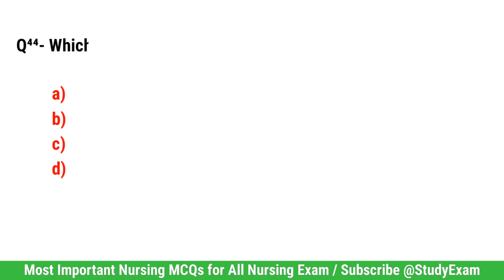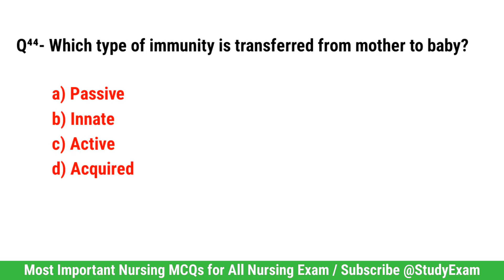Question number 44. Which type of immunity is transferred from mother to baby? Correct option is A. Passive.